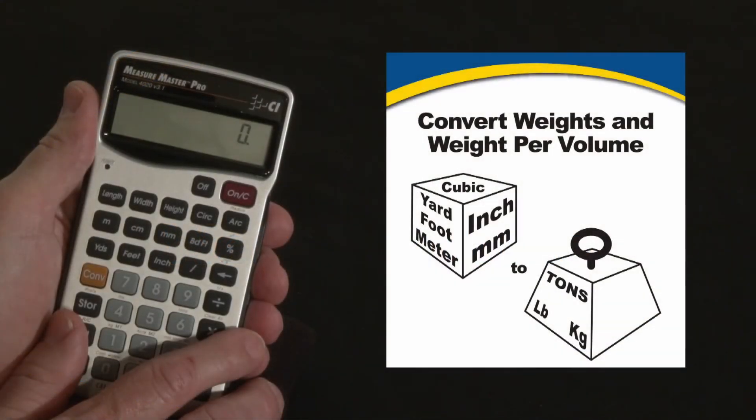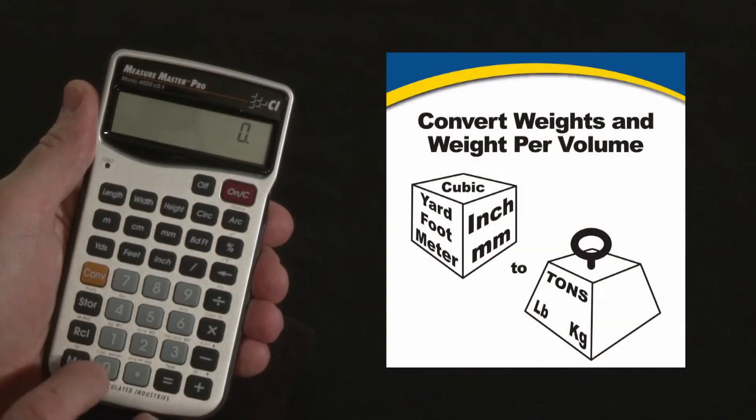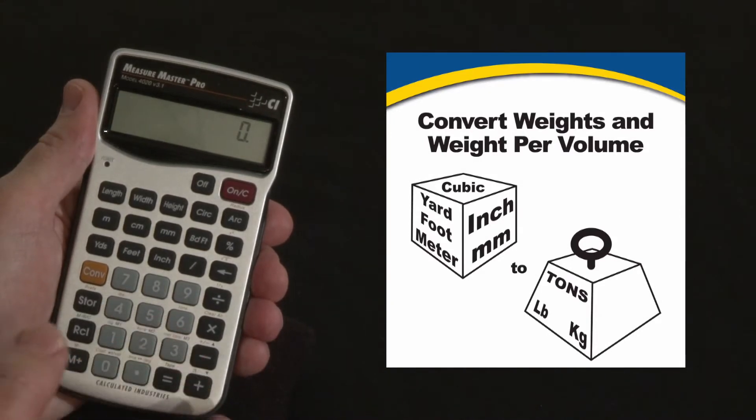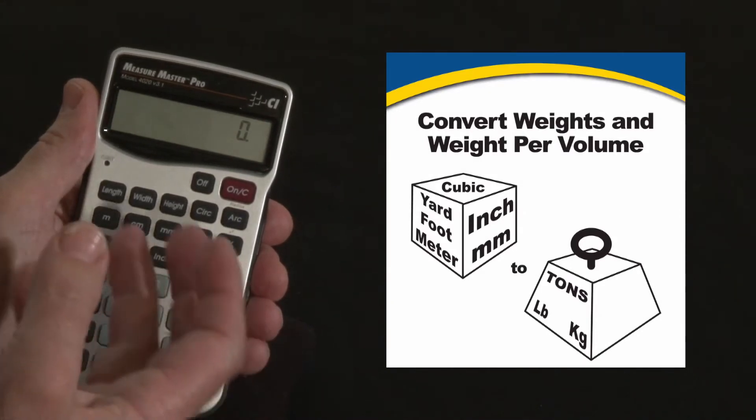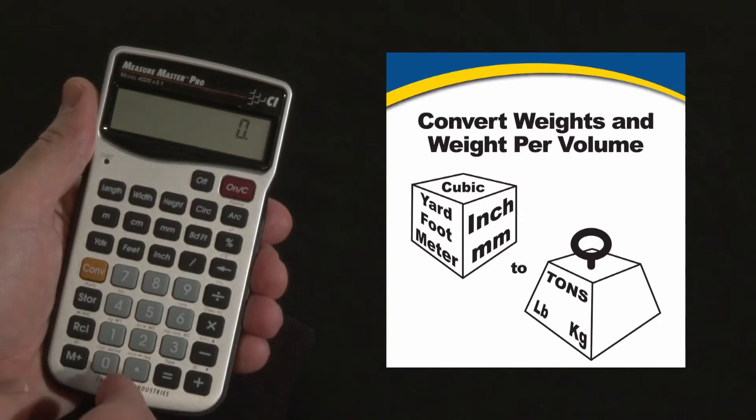Now let me show you how to use the MeasureMaster Pro's weight per volume function. This is a function that allows you to take any cubic volume of sand or gravel or cement and convert it to weight based on a known factor.